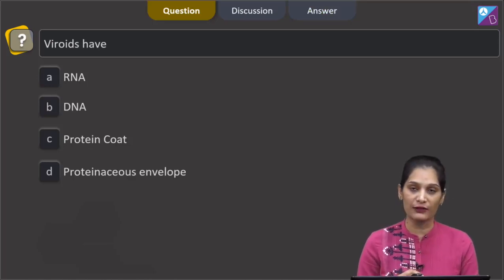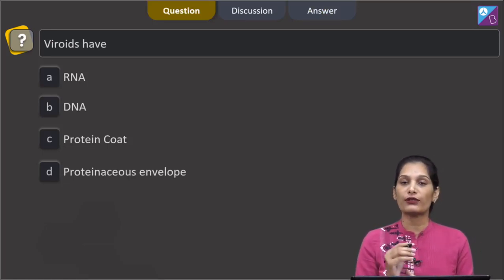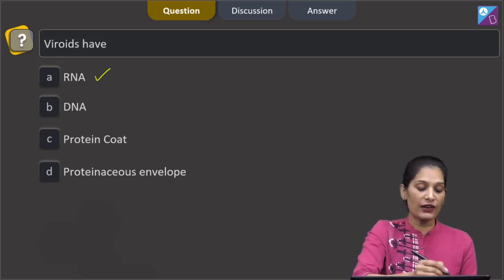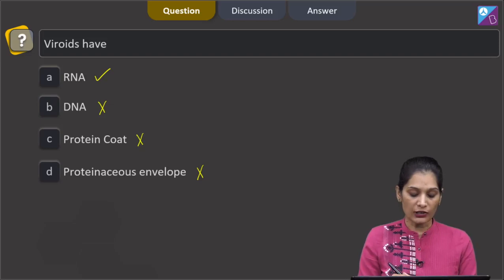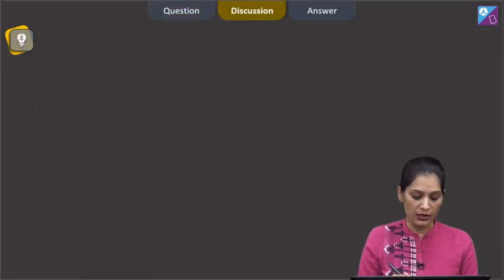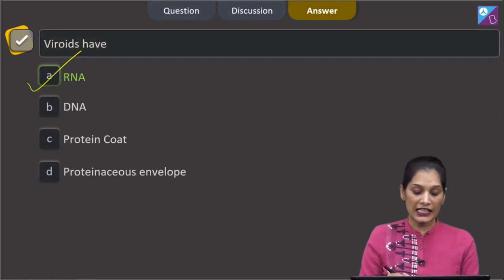Let's move to the next question. This question says: viroids have - RNA, DNA, protein coat, or proteinaceous envelope? So the correct option for the given question is option number a, which says RNA.